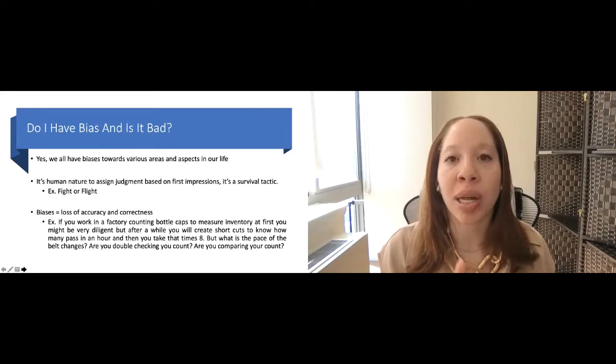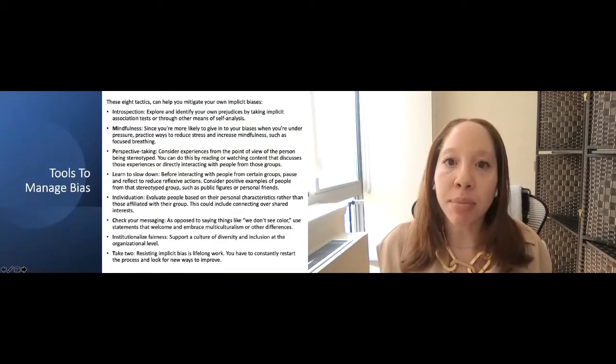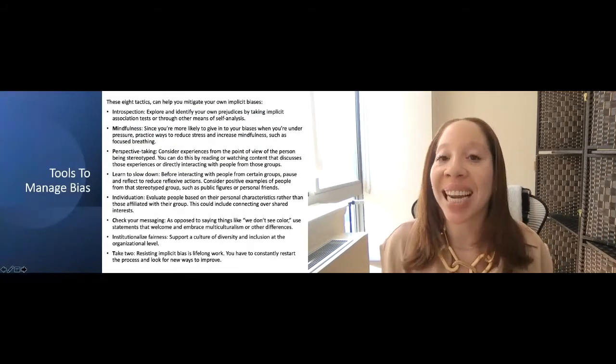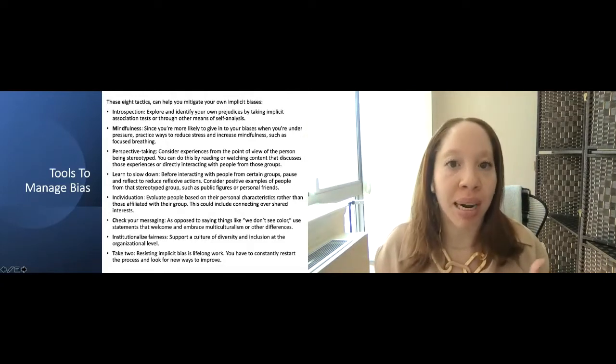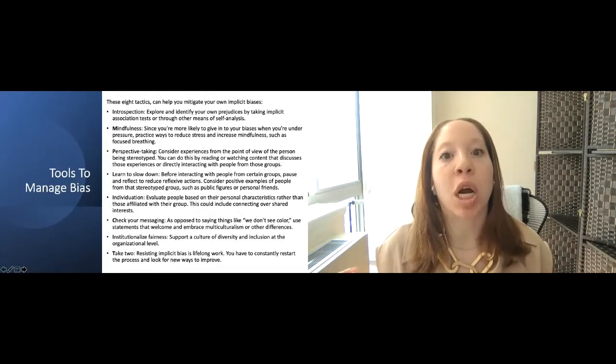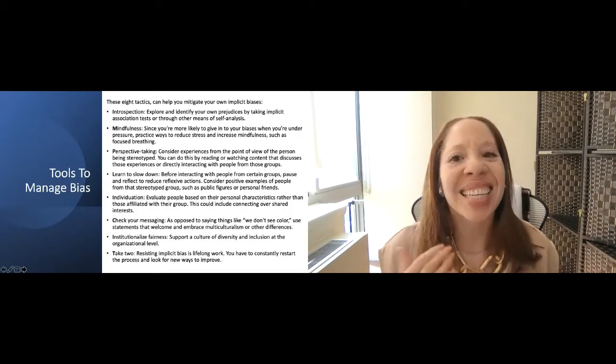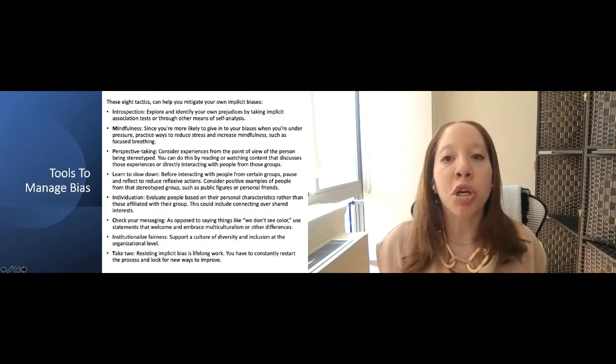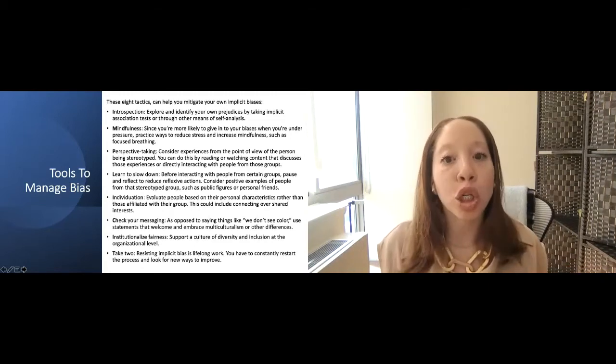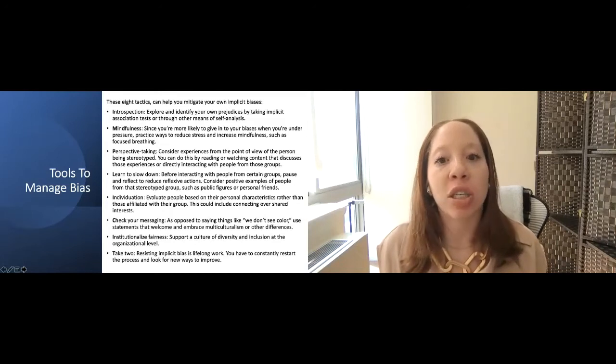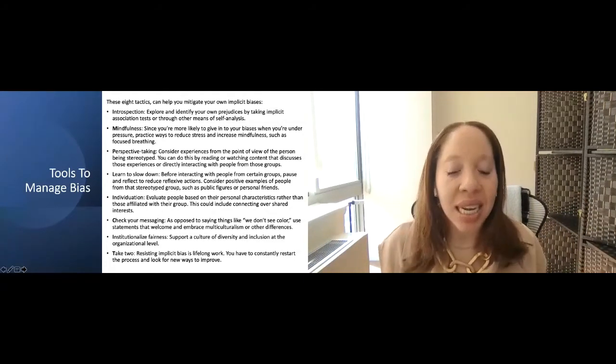So how do we manage our bias? How do we make sure that we're understanding and really taking that time to overcome bias in ourselves? Number one, introspection. We need to make sure that we explore and identify our own prejudices by taking bias tests or other means of self-analysis so we can understand what bias we all truly have. Number two, we need to be mindful, mindfulness. We are more likely to give into a bias when we're under pressure. So let's practice ways to reduce stress, increase mindfulness and focus on breathing. Perspective taking. Consider experiences from the point of view of a person being stereotyped. You can do this by reading or watching content that discusses how these experiences are interacting with various people. Learn to slow down. Before interacting with people from certain groups, pause and reflect to reduce reflexive actions. Consider positive examples of people from the stereotyped group so that you have positive influences.